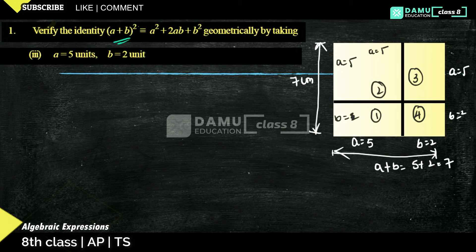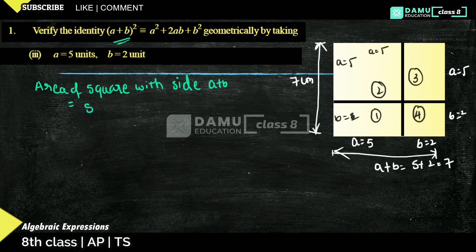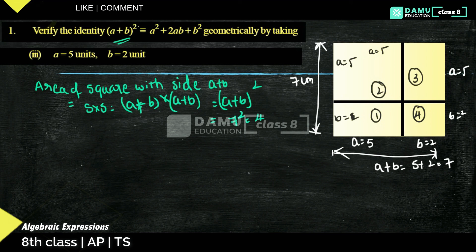We need to prove this formula. Area of square with side (a + b): side into side is (a + b) into (a + b), which is (a + b) whole square. So a plus b whole square equals 7 squared equals 49 centimetre square.